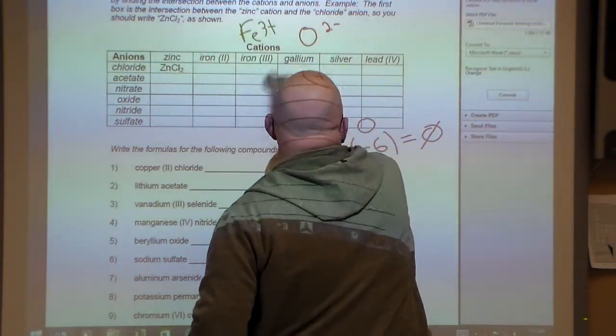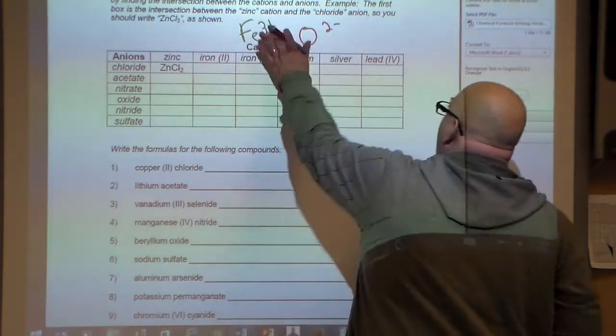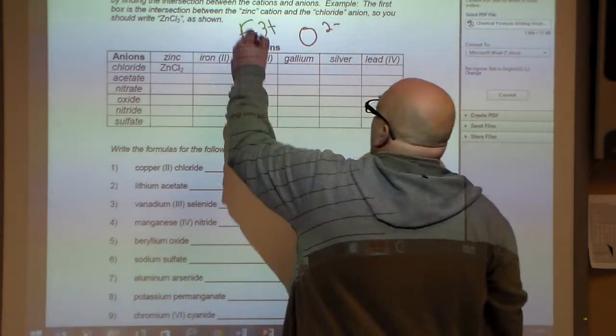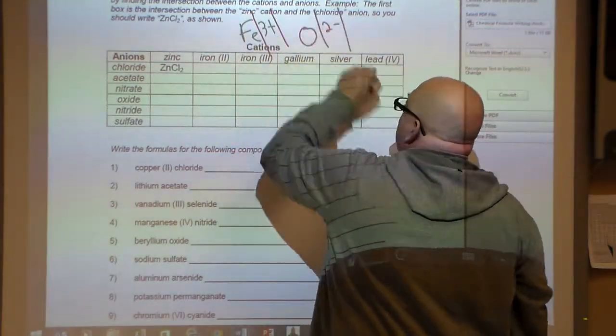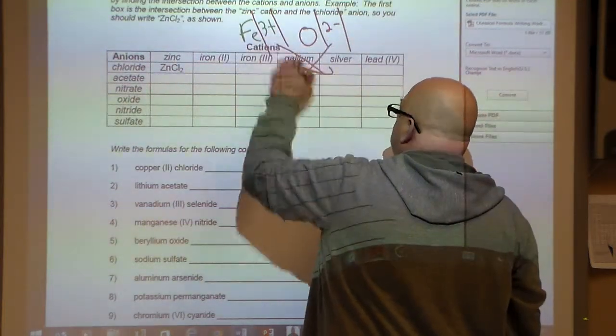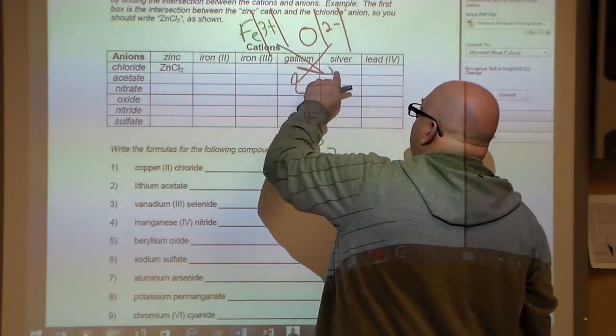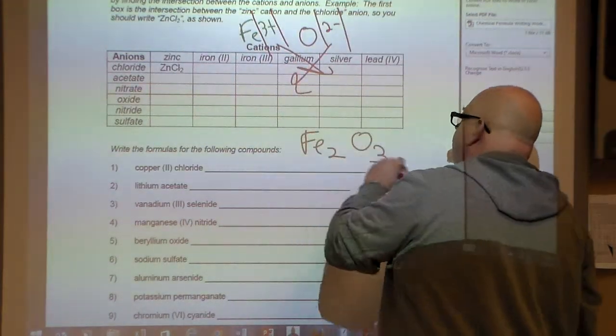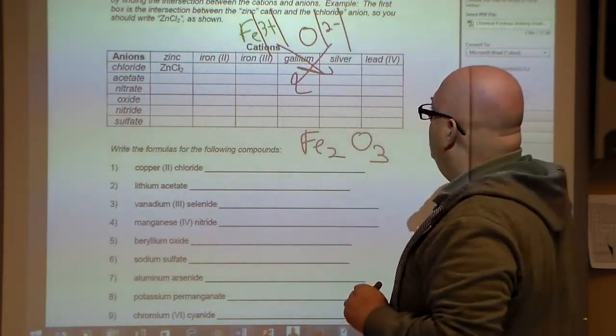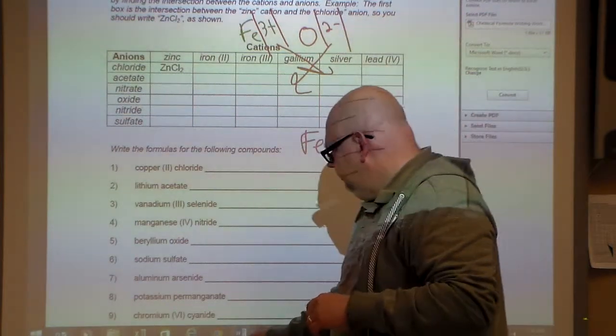So I can go ahead and I can use the crisscross rule again, where again I would take the absolute value of the numbers and then I can bring them down. So I would have Fe2 and then bring down the O3, and that's iron three oxide, Fe2O3. That's basically it for that. Alright, one more example.